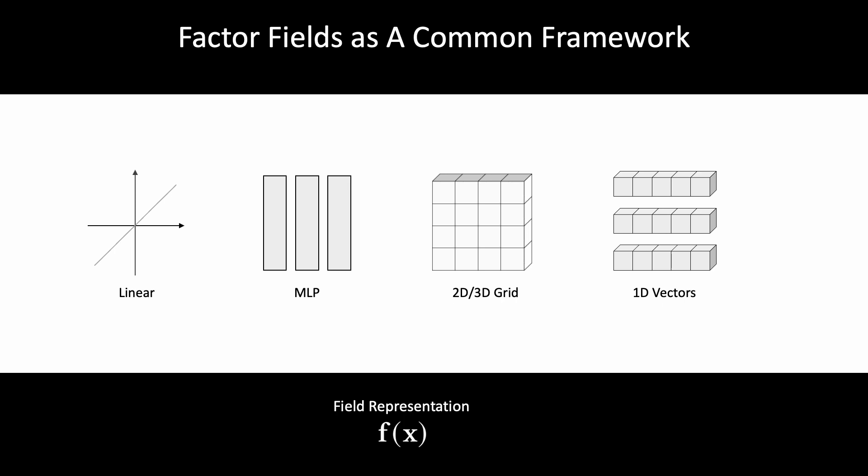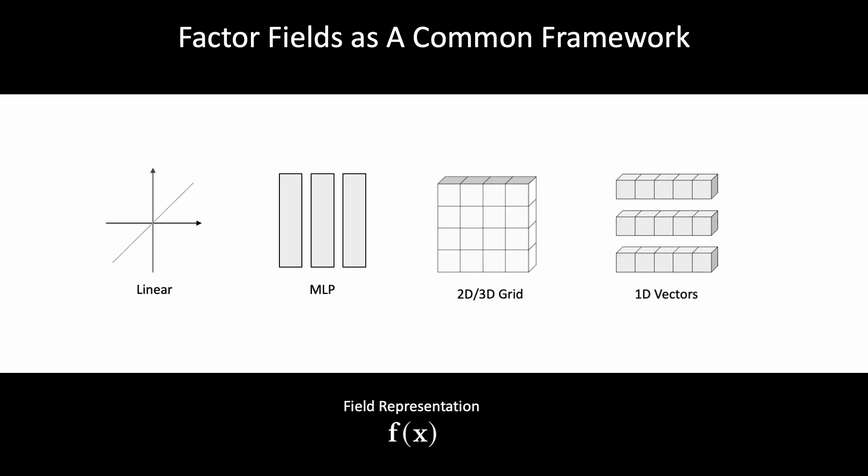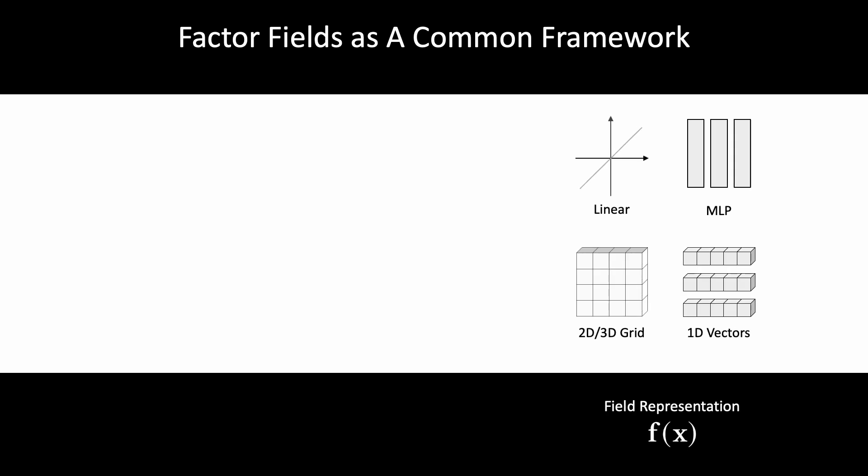In particular, we consider polynomials, MLPs, 2D and 3D feature grids, and 1D feature vectors. Since the signal domain can be 1D, 2D, 3D, and 4D and even higher, while the scene representation can also be at any dimension.